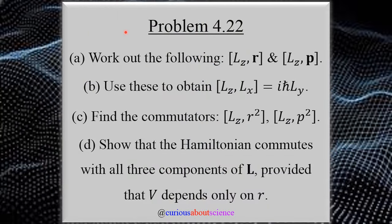This problem asks us to do quite a bit of work with the following commutator relations. In part A, we have to find six commutator brackets between angular momentum and the position vector and linear momentum. In part B, we find a commutator bracket with two angular momentum components. In part C, we find a commutator of linear momentum with some squares. And in part D, we showcase how the Hamiltonian commutes with all three components of L.